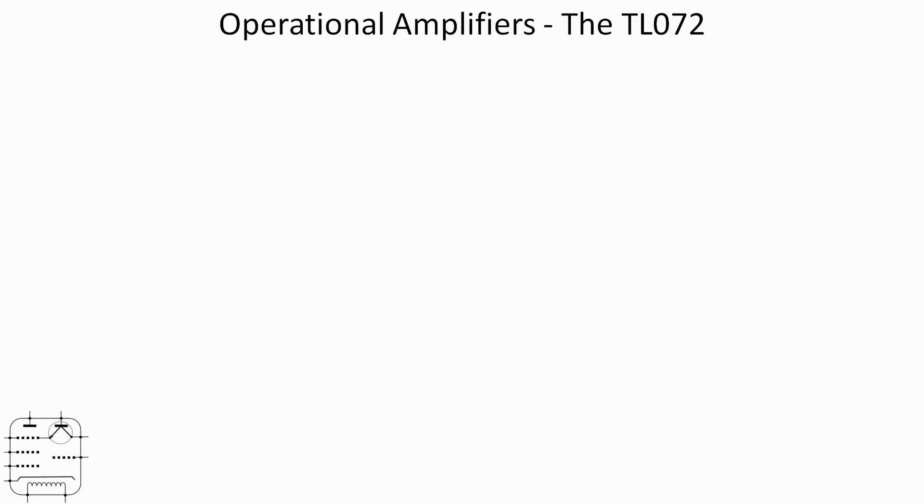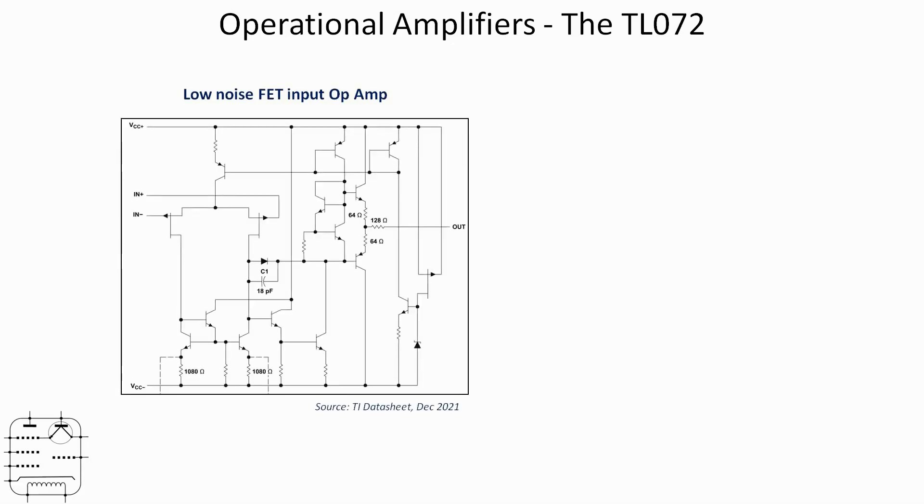First of all, starting with a little bit of revision on the op amp that we're going to use today. The op amp we're going to use is the TL072, and it's a low noise FET input op amp. According to the data sheet, the internal circuit looks something like that. You can see the two FET stage inputs on the upper left hand side of the circuit diagram there.